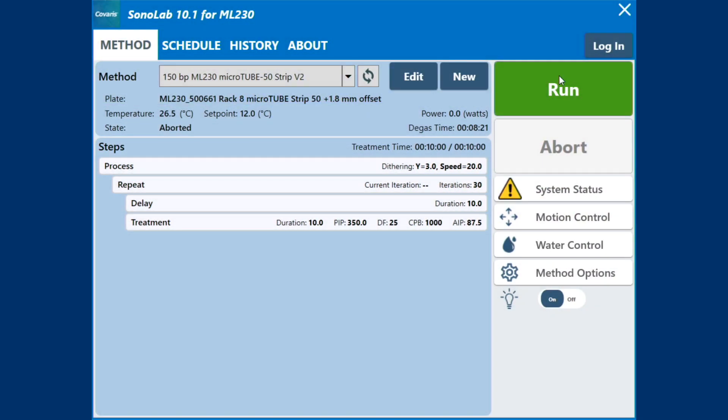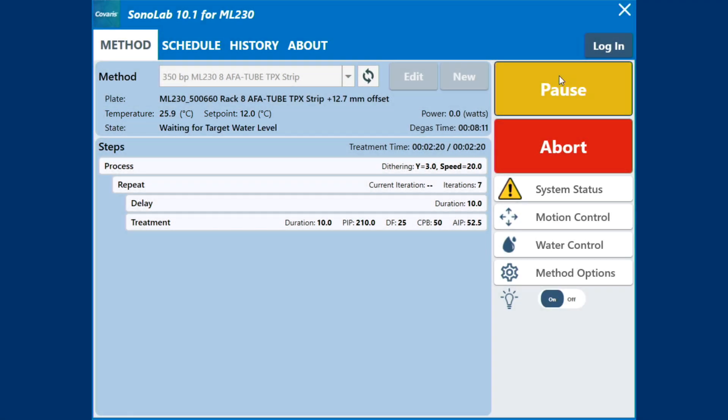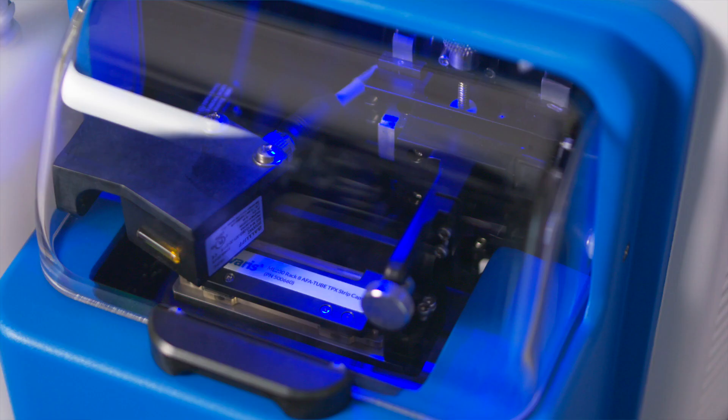The ML230 water control automatically fills the bath to the appropriate level for the tube specified in the method when the Run button is touched to start a method. The ML230 system automatically adjusts the water temperature to match the method temperature set point after Run is selected. The water temperature status will turn green when the temperature is within the min and max limits. The safety cover must be closed. The instrument will not run if the safety cover is not closed.